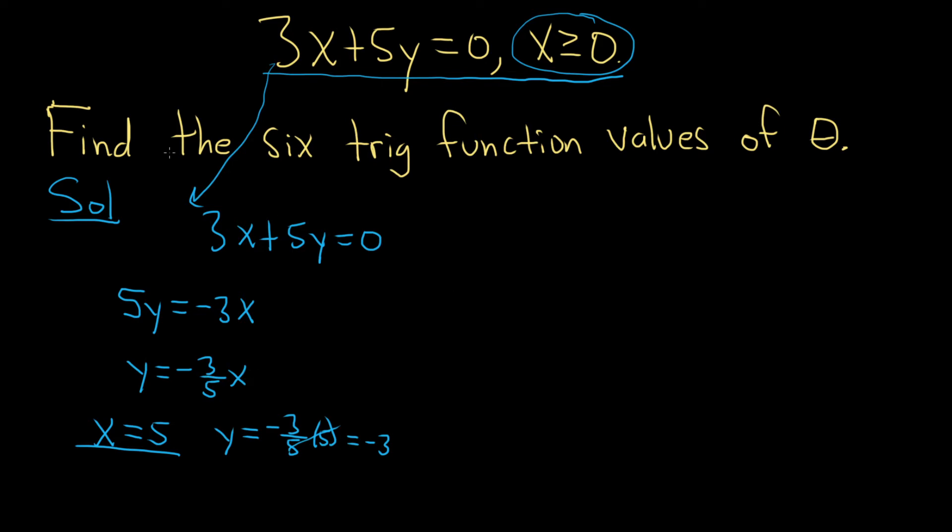So now we have our ordered pair, which we can use to do this problem, which is 5 comma negative 3. So this is our x and this is our y. If you wanted to plot this point, you could. It would look something like this. You would go right 5 and then maybe down 3 and so it would be maybe here. And then this would be your angle that you're working with, theta. And this point here would be 5 negative 3.